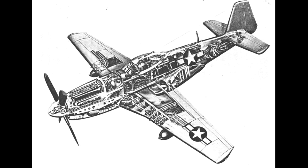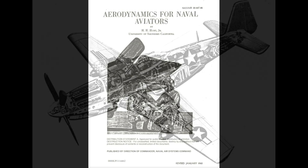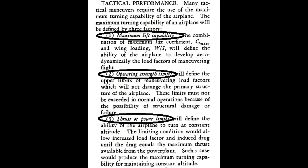For reference, we're using the book Aerodynamics for Naval Aviators — in my opinion the best book on this subject, and it's a free download. Maximum turning performance is determined by three factors: maximum lift capacity, which is a function of wing loading and wing design; operating strength limits, which determines how many G's the airplane can withstand; and available power. Power is very important to turn performance — it's crucial for sustained turn performance and in many cases is the limiting factor for maximum turn performance.